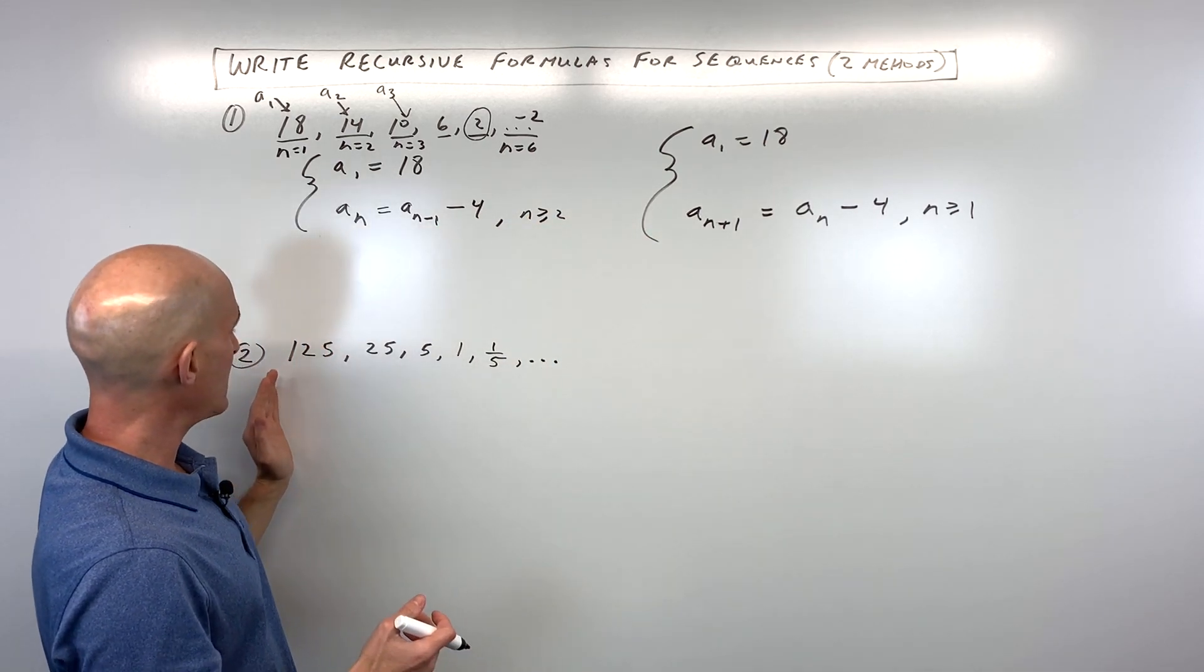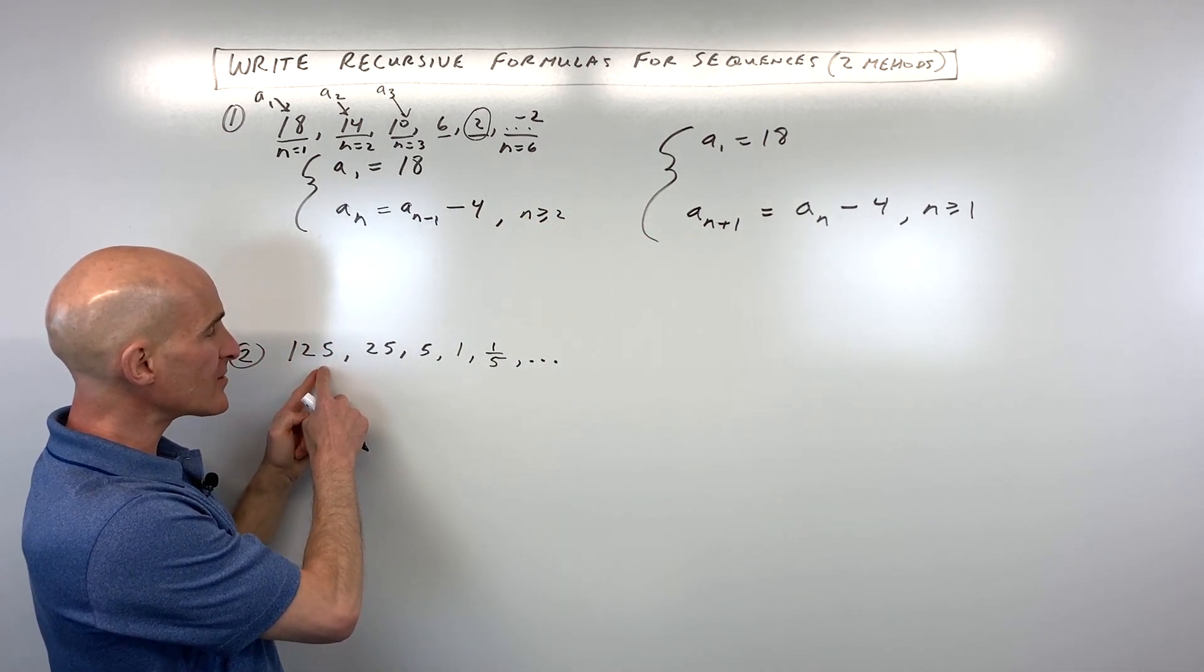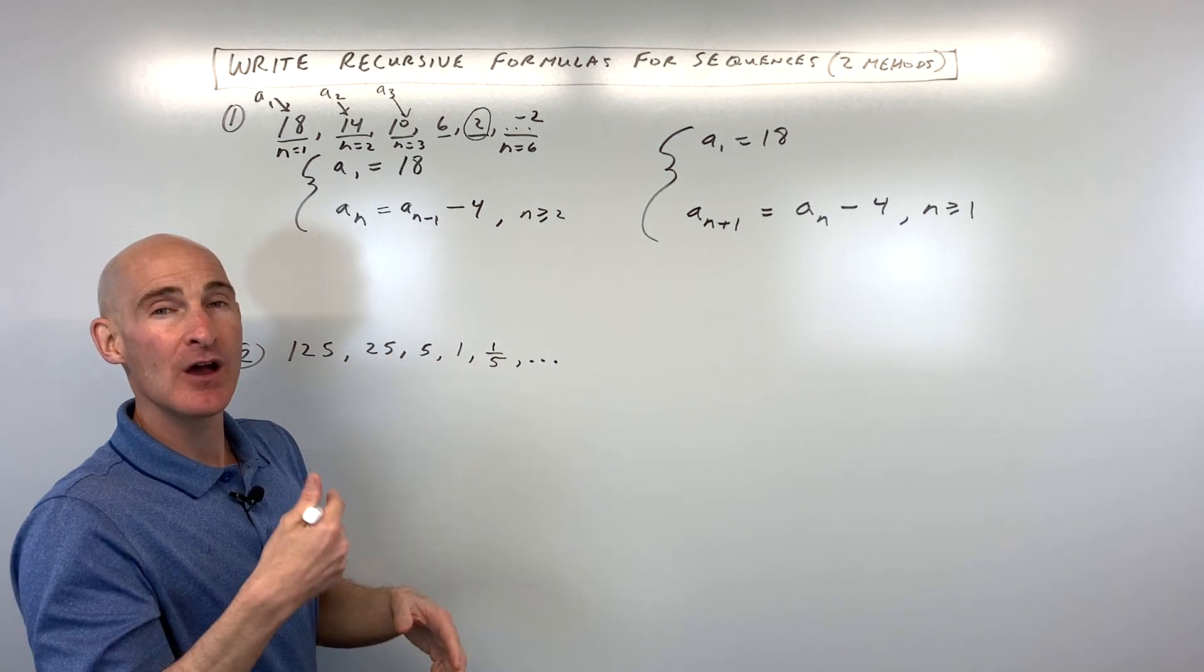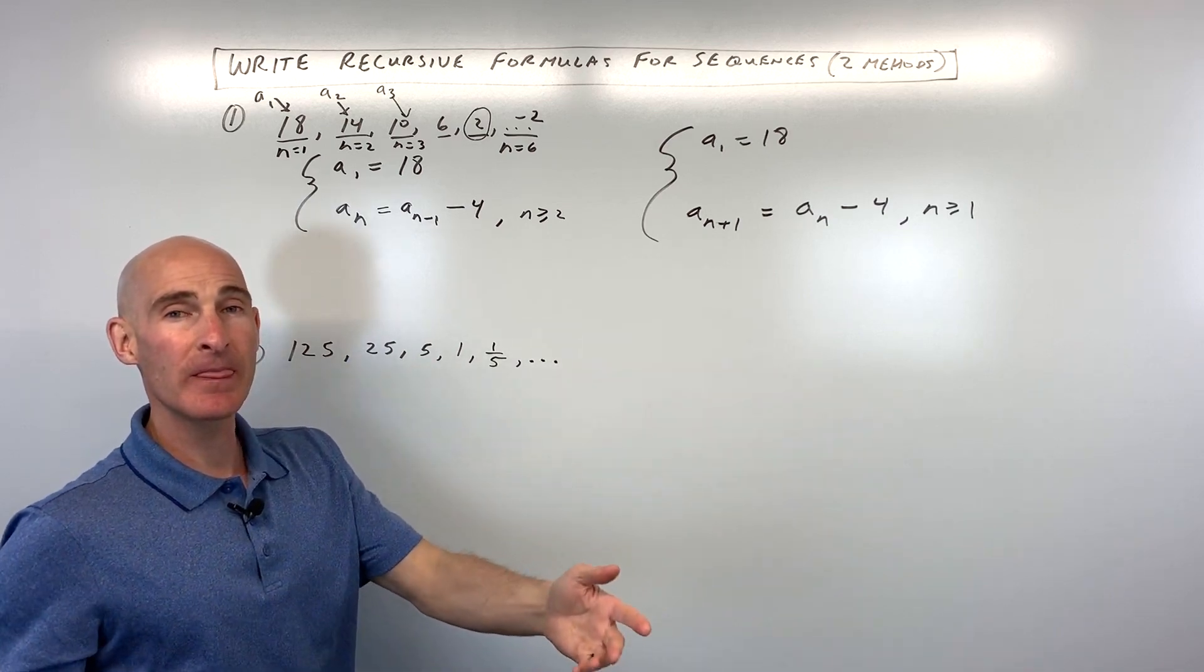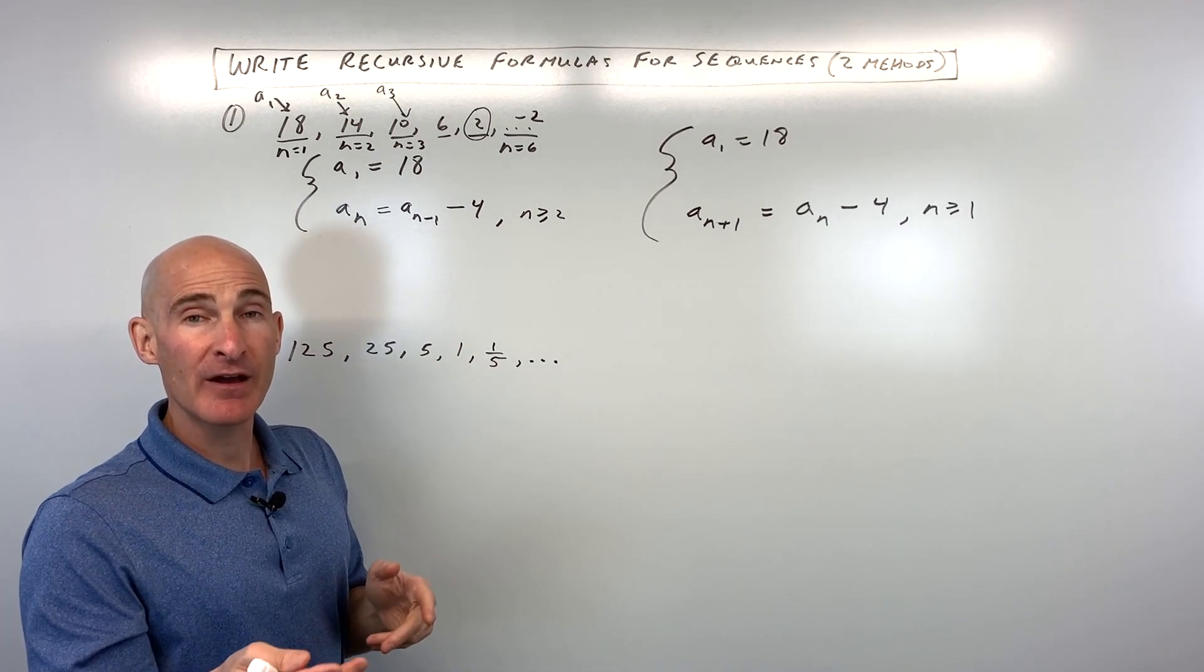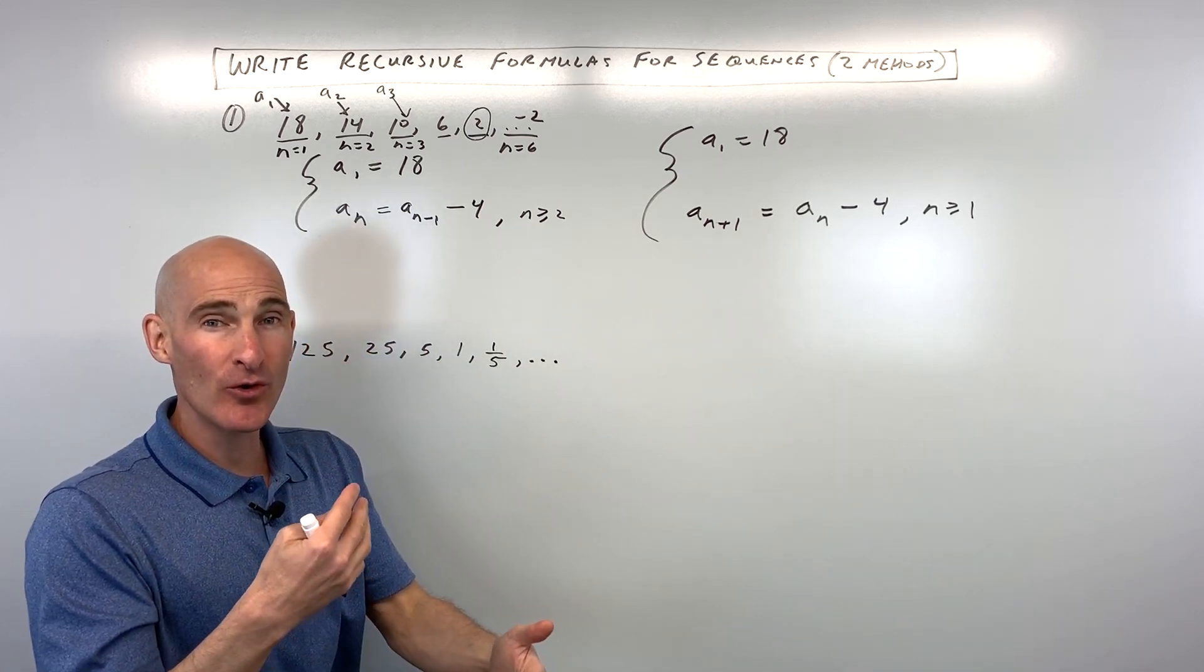Let's do another example. Say for number 2 here. What's the pattern? How are we going from 125 to 25 to 5 to 1 to 1 fifth? What are we doing to get to that next term? Well, if you said dividing by 5, you're right. But dividing by 5 is like multiplying by the reciprocal 1 fifth, right?